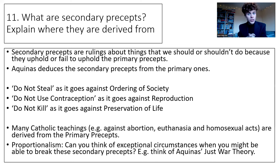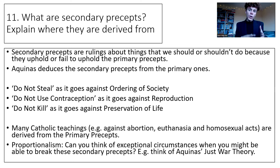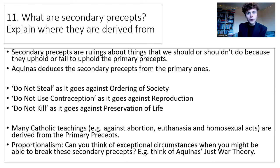Many Catholic teachings — for example those against abortion, euthanasia and homosexual acts — are derived from the primary precepts. Secondary precepts are created by a government, church or society and are designed to uphold those five primary precepts. A quick link to proportionalism here — a more modern development of Natural Moral Law. Can you think of exceptional circumstances when someone could be justified in breaking secondary precepts? Proportionalism is the development that you should always follow the rules unless there is a proportionate reason to break them. Aquinas's own just war theory, for example, suggests there are times when you can break the precept 'do not kill'.